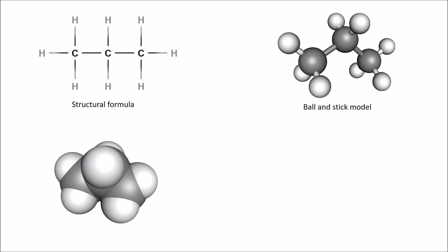Ball and stick models can be helpful for envisaging what these molecules look like in more detail. Another way we can represent organic molecules is a space filling model, which might look like something out of Big Hero 6, but all it shows is the outside of the electron clouds — white for hydrogens, gray for carbons — and because they're sharing electrons those clouds overlap. This gives a good idea of how much space a molecule takes up, but it's not very useful for showing the bonds themselves.